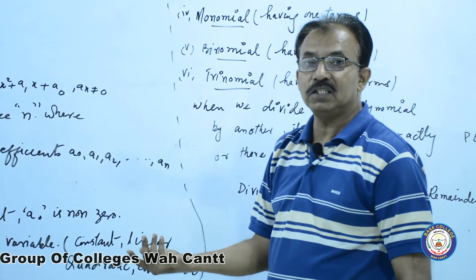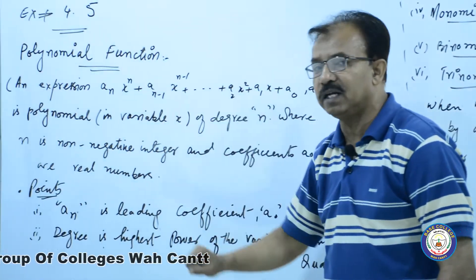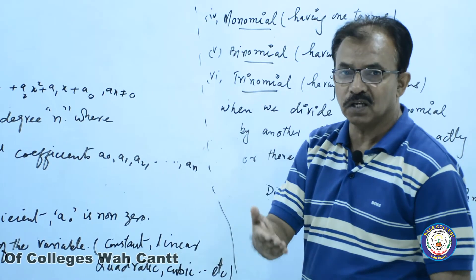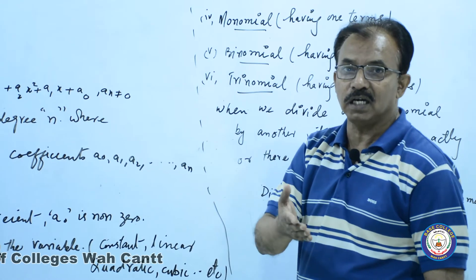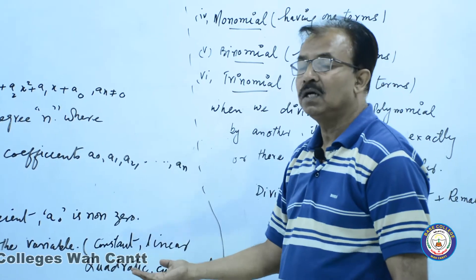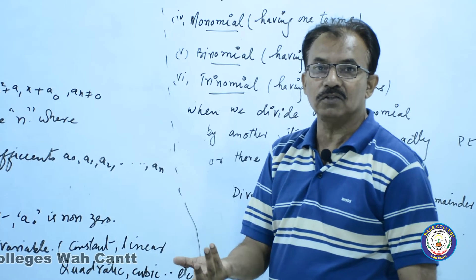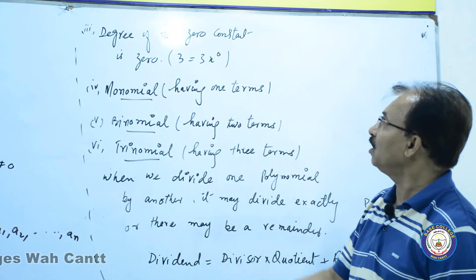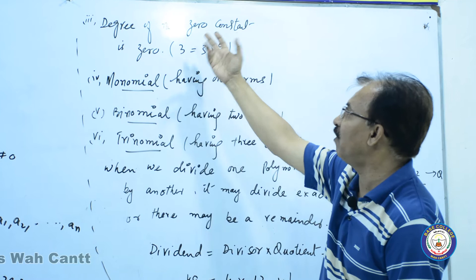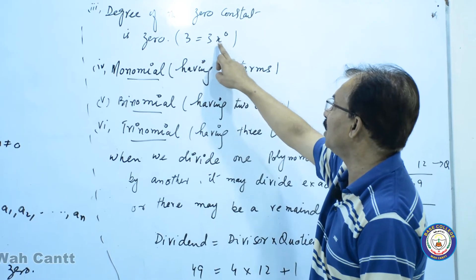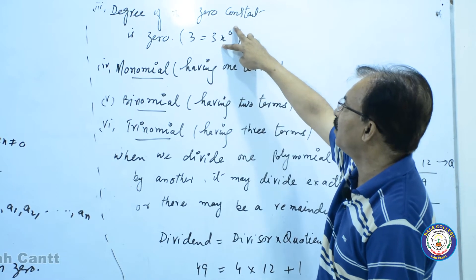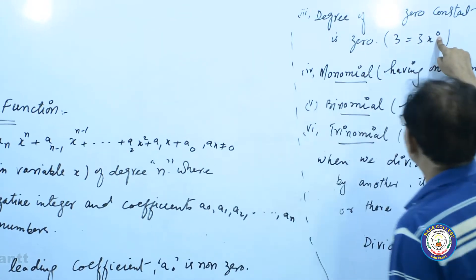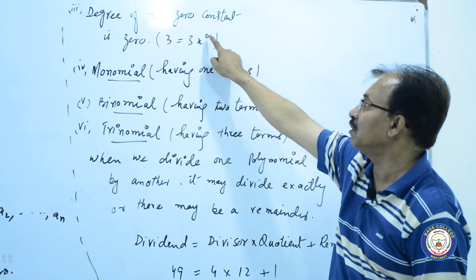یہ constant بھی ہو سکتی ہے کہ جس میں کوئی power zero ہے تو وہ constant میں آ جائے گی۔ degree of non-zero constant is zero۔ for example three کو میں ایسے لکھ سکتا ہوں: three x to the power zero۔ کسی بھی چیز کی power zero one ہوتی ہے۔ تو x کی power zero ہے، اس کی degree zero کہلائے گی۔